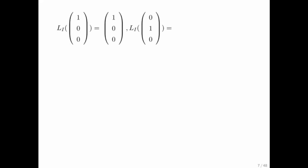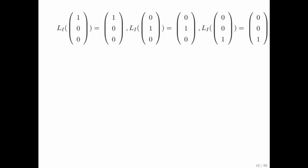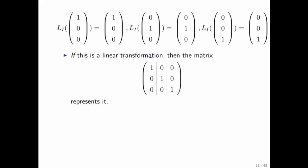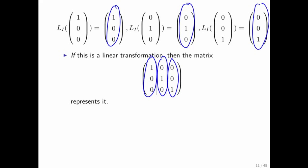How do we do that? In goes the first unit basis vector, out comes the first unit basis vector. In goes the second unit basis vector, out comes the second unit basis vector. In goes the third unit basis vector, out comes the third unit basis vector. This tells us what the columns of the matrix that might represent this vector function are — it's those three vectors as its columns.